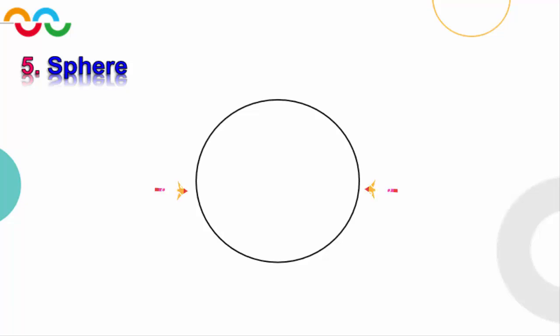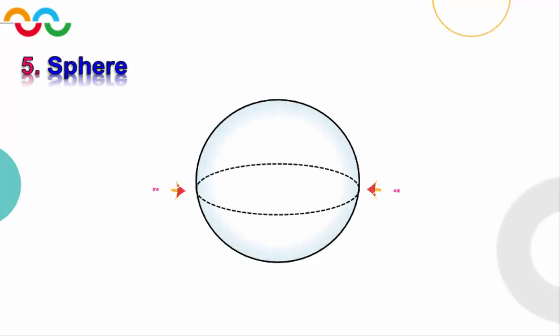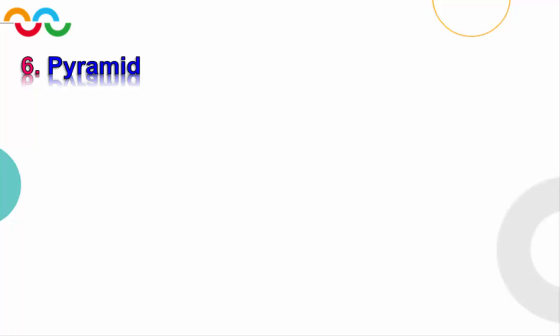The second step is drawing an oval shape in the middle inside the circle. Finally we draw the sphere. Now we arrive at our last solid, which is the quadrilateral pyramid. To draw the pyramid we need to draw two congruent triangles, both of them in different directions. So we start by drawing a triangle like this.